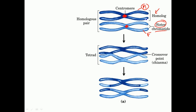Similarly, the two chromatids from the father are sister chromatids of each other. But if you take one chromatid from the mother origin and compare it with one from the father origin, those two are called non-sister chromatids because they are of different origins. Crossing over takes place between non-sister chromatids — if we compared sister chromatids, they would be exactly the same with no genetic difference.